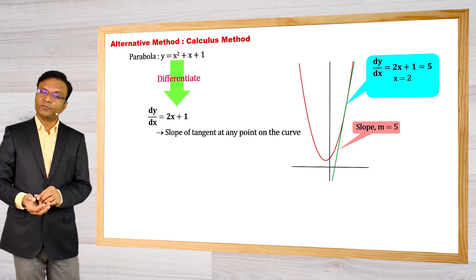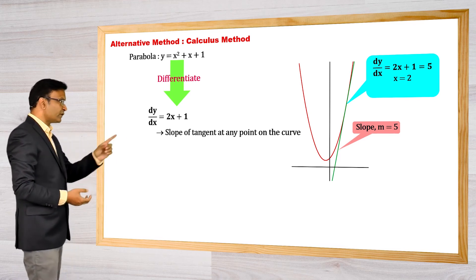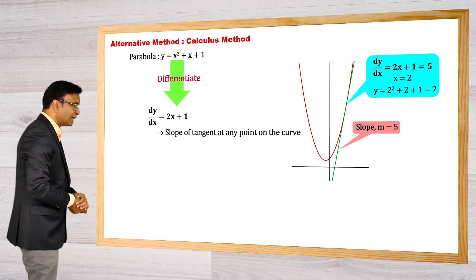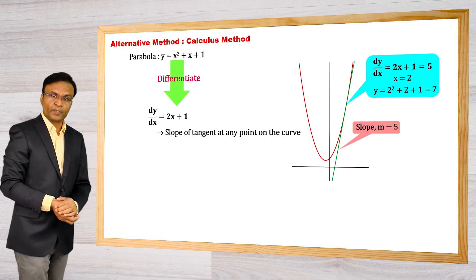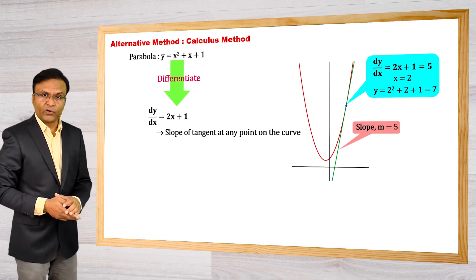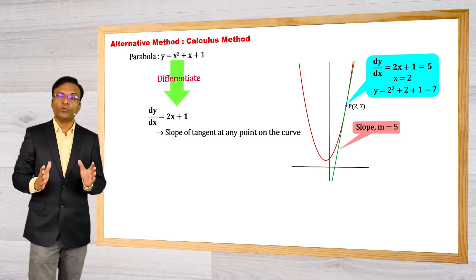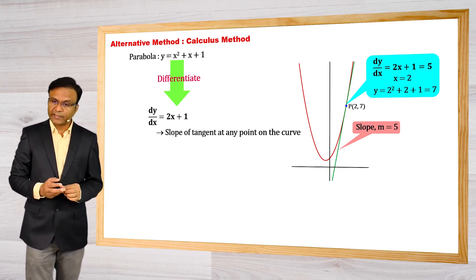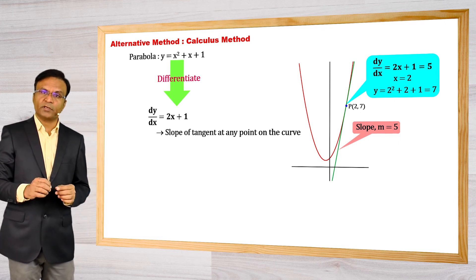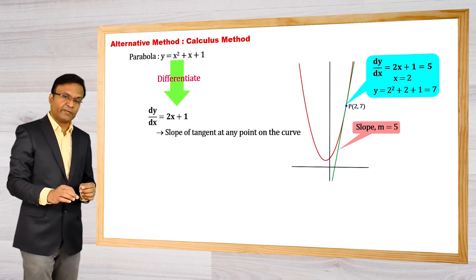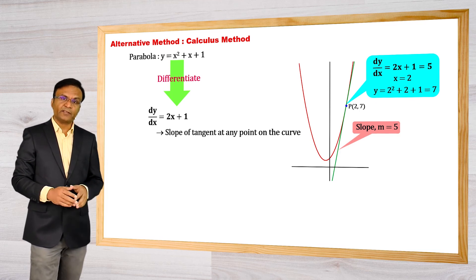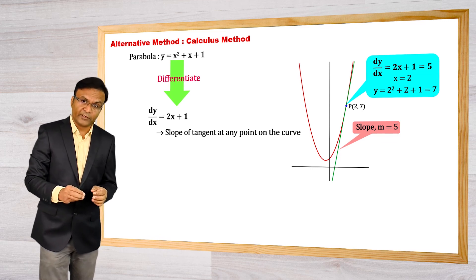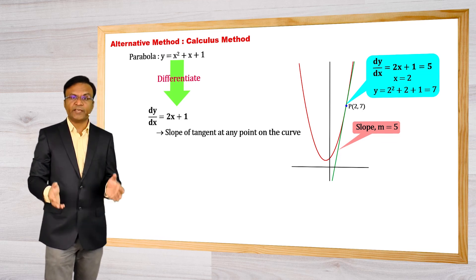To get the ordinate of this point, put x is equal to 2 in the equation of curve. We get y is equal to 2 square plus 2 plus 1 is equal to 7. So the point of contact P is (2, 7). Here we understand: when the point is given on the curve we get the slope of tangent using dy by dx, and when the slope of tangent is given we get the point of contact on the curve again using dy by dx.